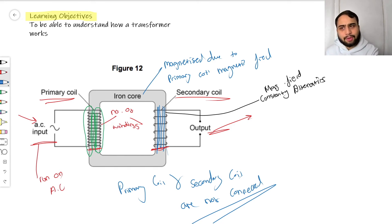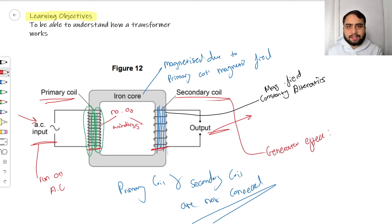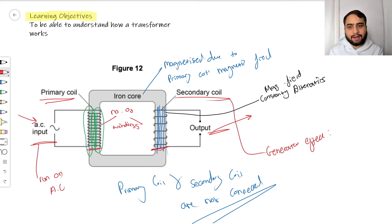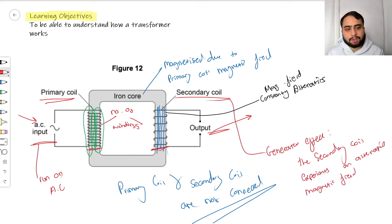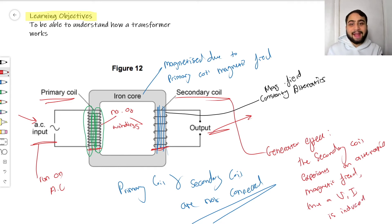So what's happening to our secondary coil? It's experiencing the generator effect. The generator effect is when a conductor is placed within a changing magnetic field — a voltage and current is induced within it. Because of our alternating input, the magnetic field around the secondary coil is also alternating. So the secondary coil experiences an alternating magnetic field, and a voltage and current are induced within it, which get sent to the output.